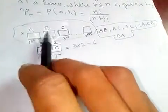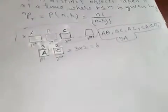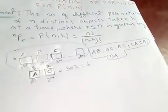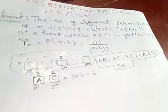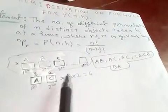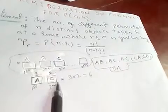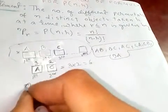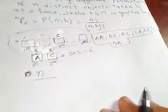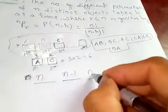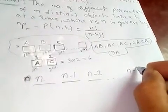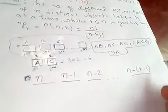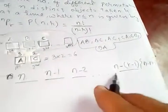Let me explain the number of permutations of n objects taken r at a time. This is the same as finding the number of ways in which r places can be filled by objects of n at our disposal. Since any one of the n objects can be placed in the first place, it can be done in n ways. The second place can be filled in n minus one ways, the third in n minus two ways, and so on. The r-th place can be filled in n minus r plus one ways.